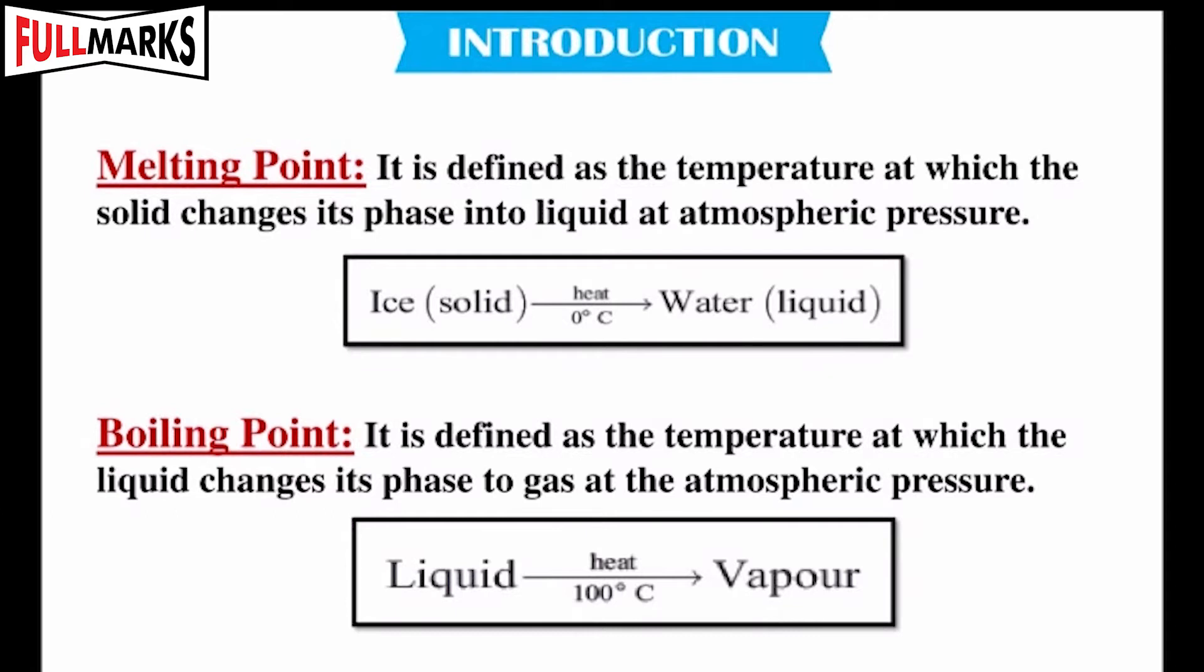Melting point is defined as the temperature at which a solid changes its phase into liquid at atmospheric pressure. Boiling point is defined as the temperature at which liquid changes its phase to gas at atmospheric pressure.